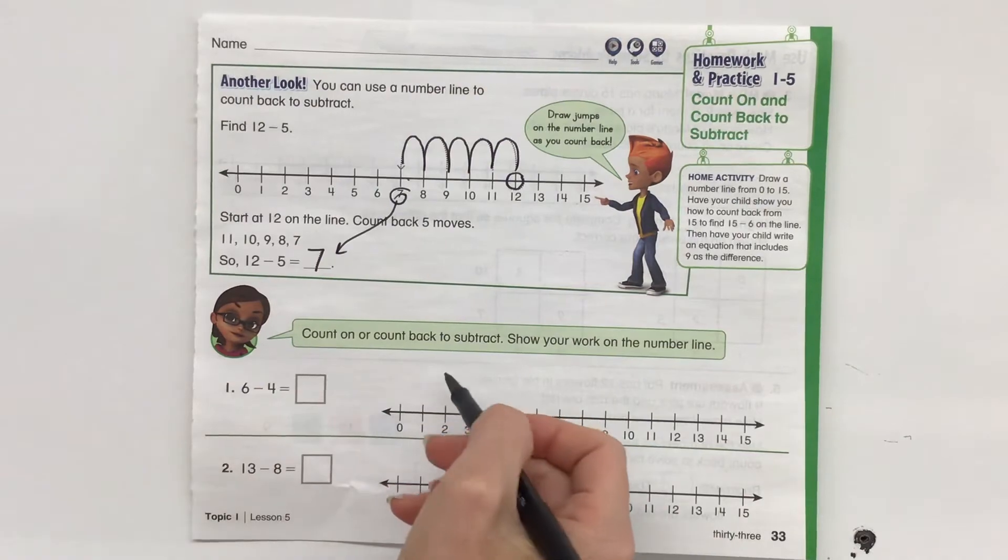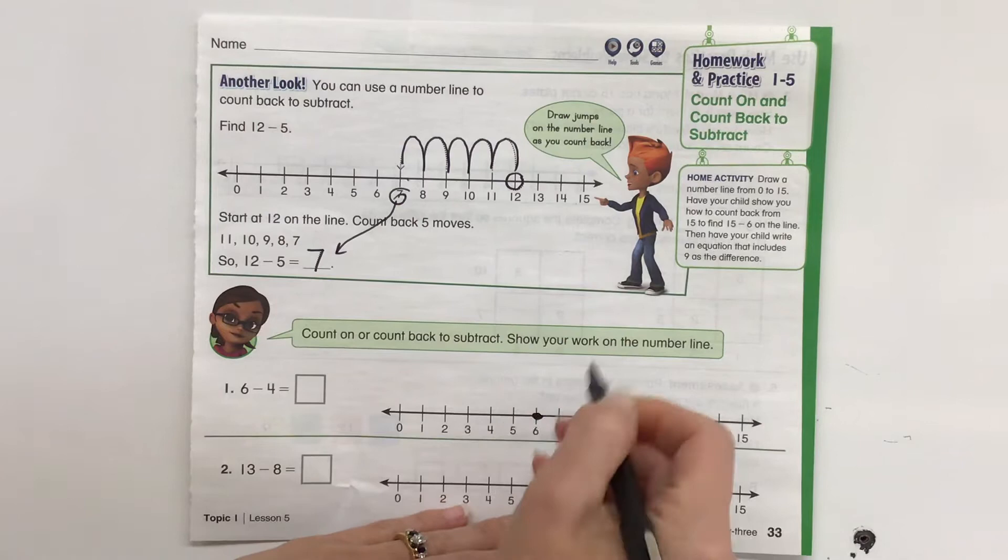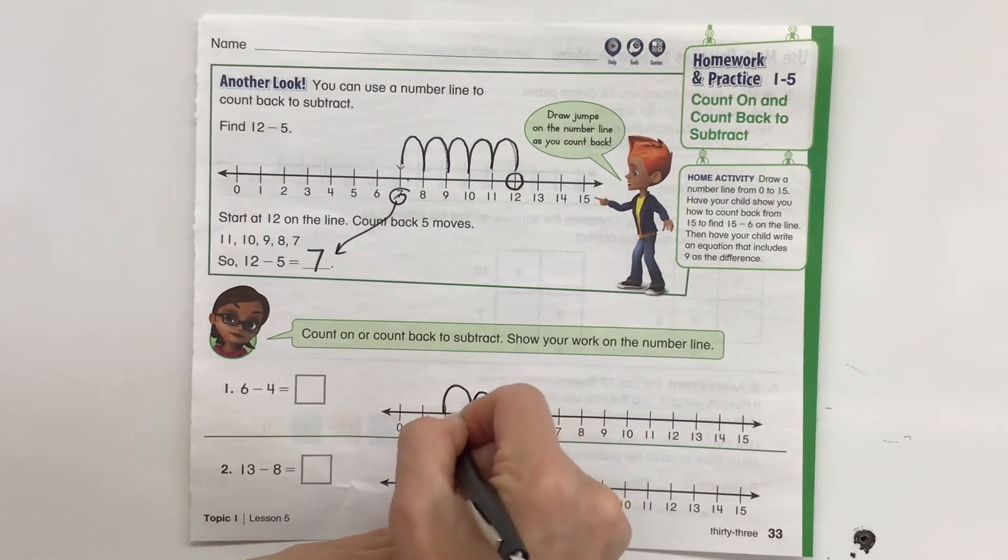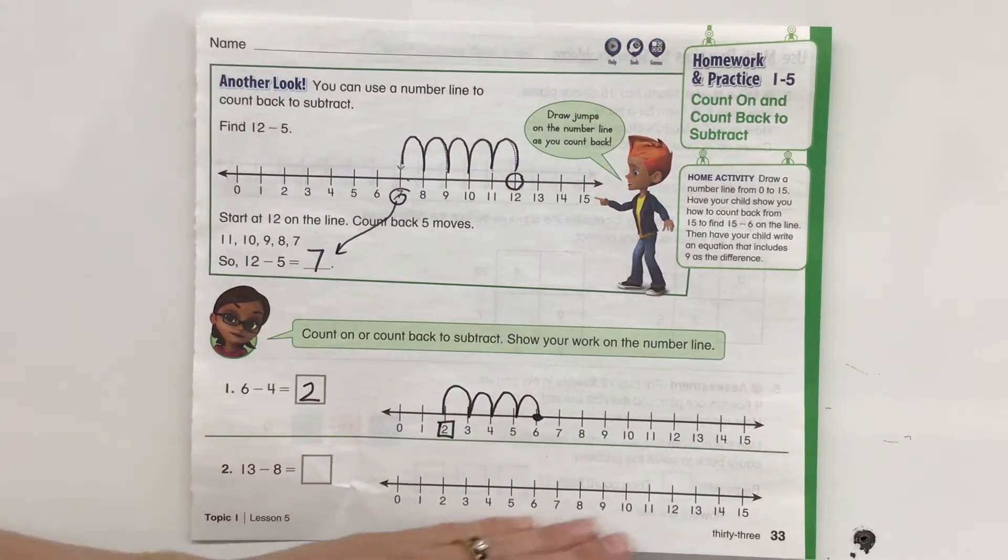Count on or back to subtract. So you get to pick 6 minus 4. I'm going to start here at 6 minus 4. 1, 2, 3, 4. Puts us at a difference of 2. 13 minus 8.